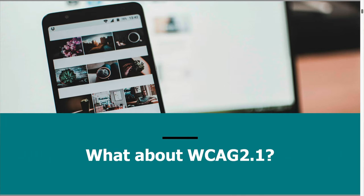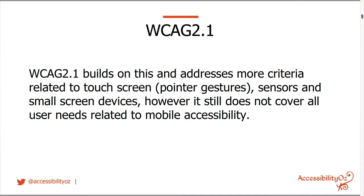WCAG 2.1 was released in 2018 — a whole 10 years after WCAG 2 was released. This was supposed to be the iteration of WCAG 2 while they're working on WCAG 3, which is called WCAG Silver, if you want to sound clever. WCAG 2.1 was supposed to address all these issues because the accessibility industry is really quite good at making our voices heard.